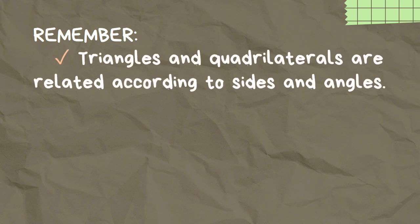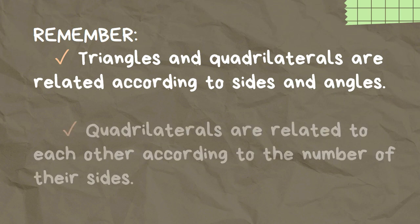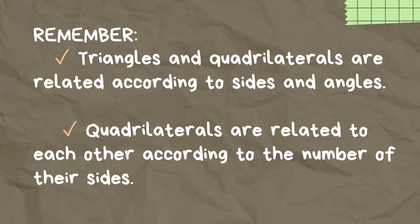Remember: triangles and quadrilaterals are related according to sides and angles. Quadrilaterals are related to each other according to the number of their sides.